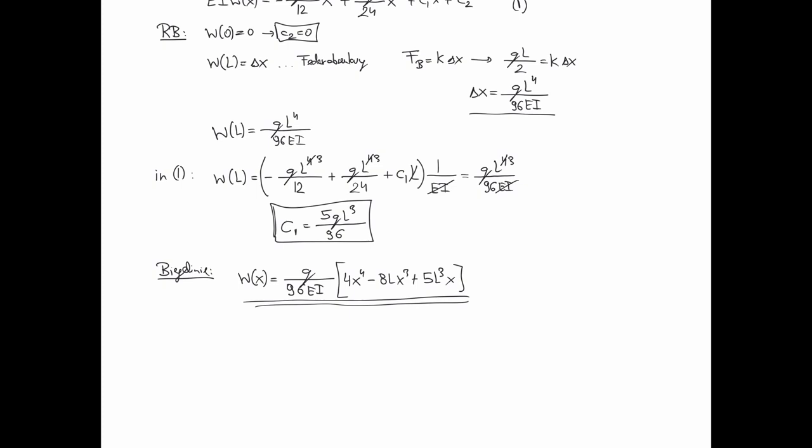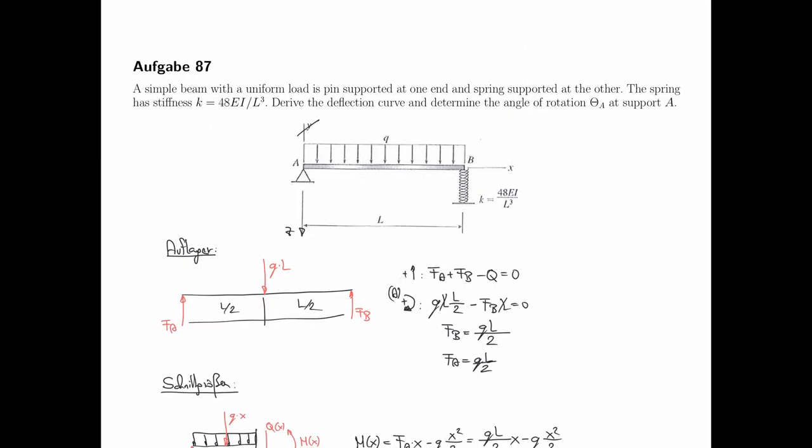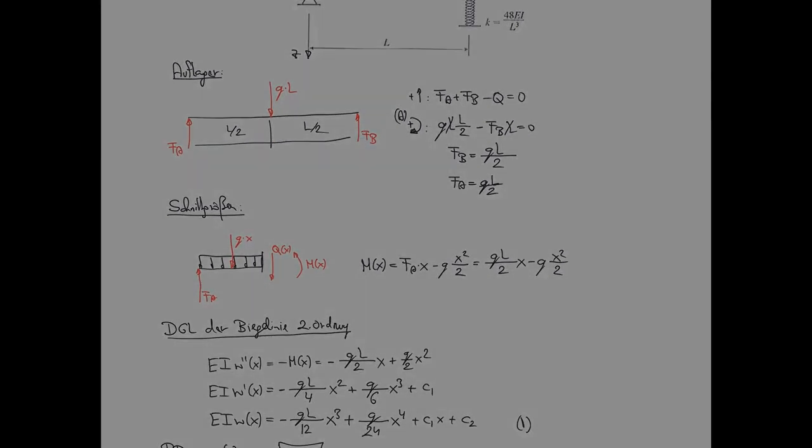Und das was da als Angle of Rotation Theta A, das ist die Steigung an der Stelle bei A. In der englischsprachigen Literatur heißt es üblicherweise Angle of Rotation, das ist einfach der Winkel um den bei A die Biegelinie gedreht ist gegenüber der horizontalen Achse, und in unserem Koordinatensystem wäre nach unten positiv, das habe ich Ihnen glaube ich auch ins Moodle hochgeladen.